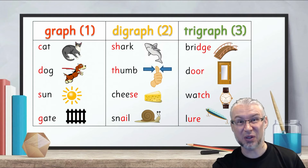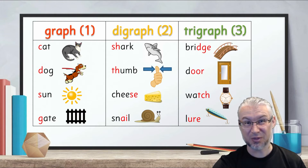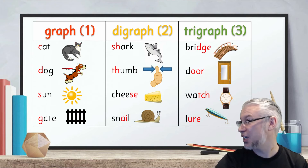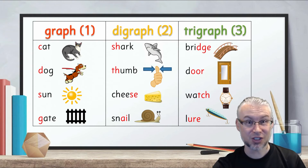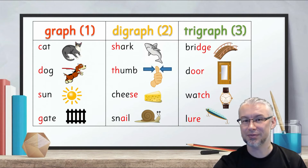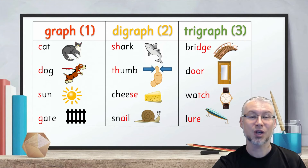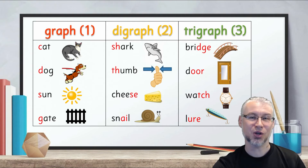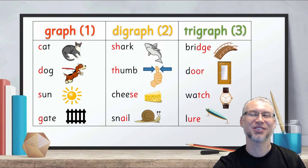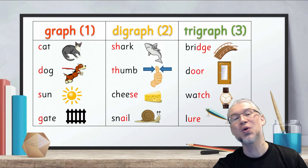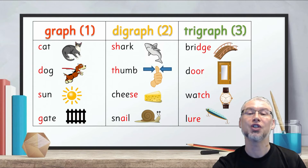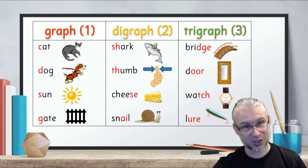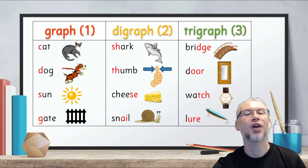If we now look in the trigraph column, we can see three-letter graphemes. J as in bridge — D-G-E. 'Or' as in door — O-O-R. 'Ch' as in watch — T-C-H. And 'ur' as in lure — U-R-E. A three-letter spelling choice is called a trigraph.